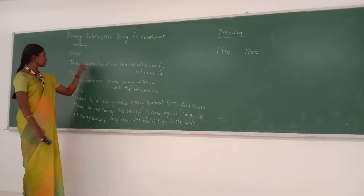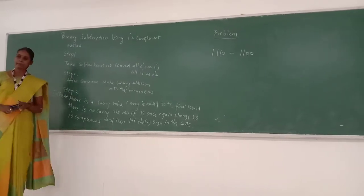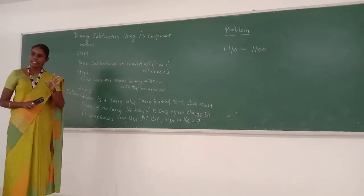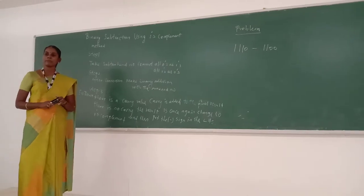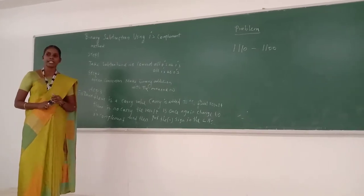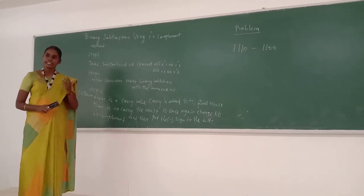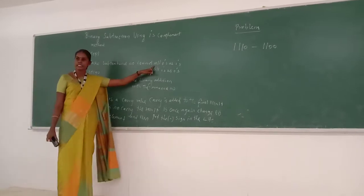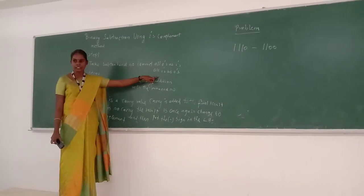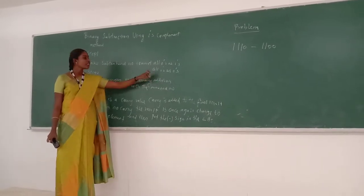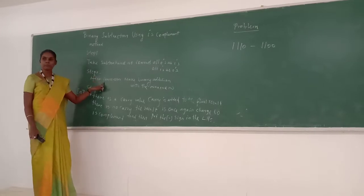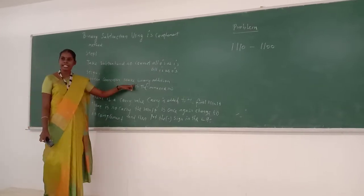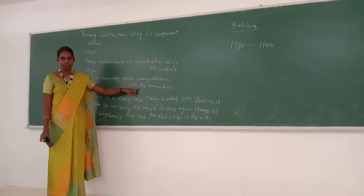In binary subtraction we have two numbers. One number is known as the minuend number and the second is the subtrahend number. Step 1: Take the subtrahend number and convert all zeros as ones and all ones as zeros. After conversion, in step 2, we have to make binary addition with the minuend number.